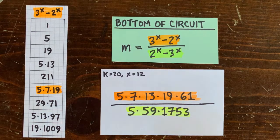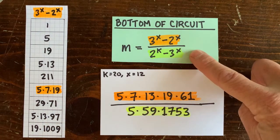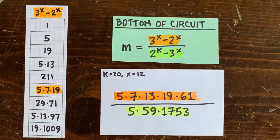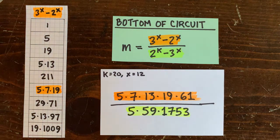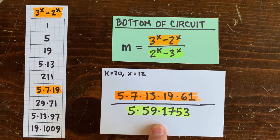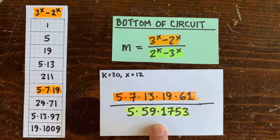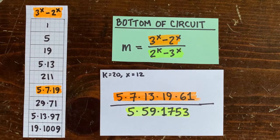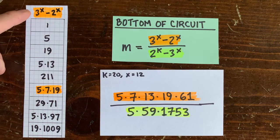We're looking at this ratio and wondering if it can ever be an integer. This is easier if we break the numerator and denominator down into prime factors. But how does something like 3 to the x minus 2 to the x factorize anyway?